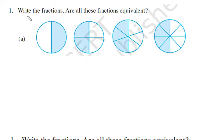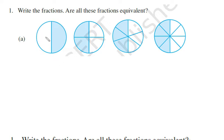First example: write the fractions. Are all these fractions equivalent? In four geometries, we look at the shaded regions and write fractions. In the first part, this whole is divided into two equal parts, so the denominator will be two.